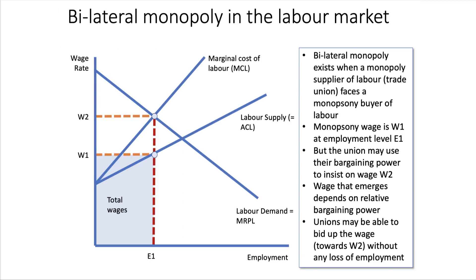A bilateral monopoly is where you have a monopsony on one side, which tends to drive wages down, and a monopoly supply of labour — a union — on the other, which tends to keep wages high. The monopsony wage tends to be W1 and the union might want W2. Where you end up depends on the relative bargaining power of the union compared with the monopsony employer, which can change with the economic cycle, changing technology, and the political situation.